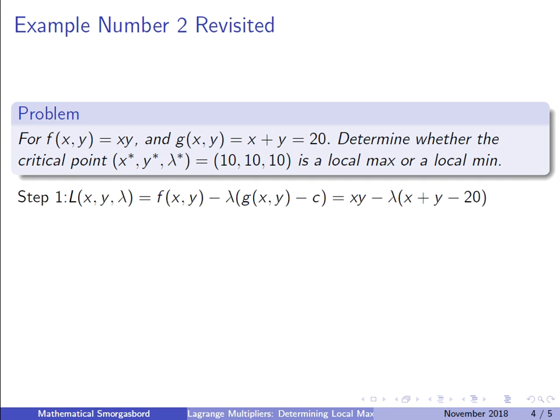So let's just do step one. Step one is calculating the Lagrangian, so I just plugged in the product function over here and then the constraint minus the value 20.